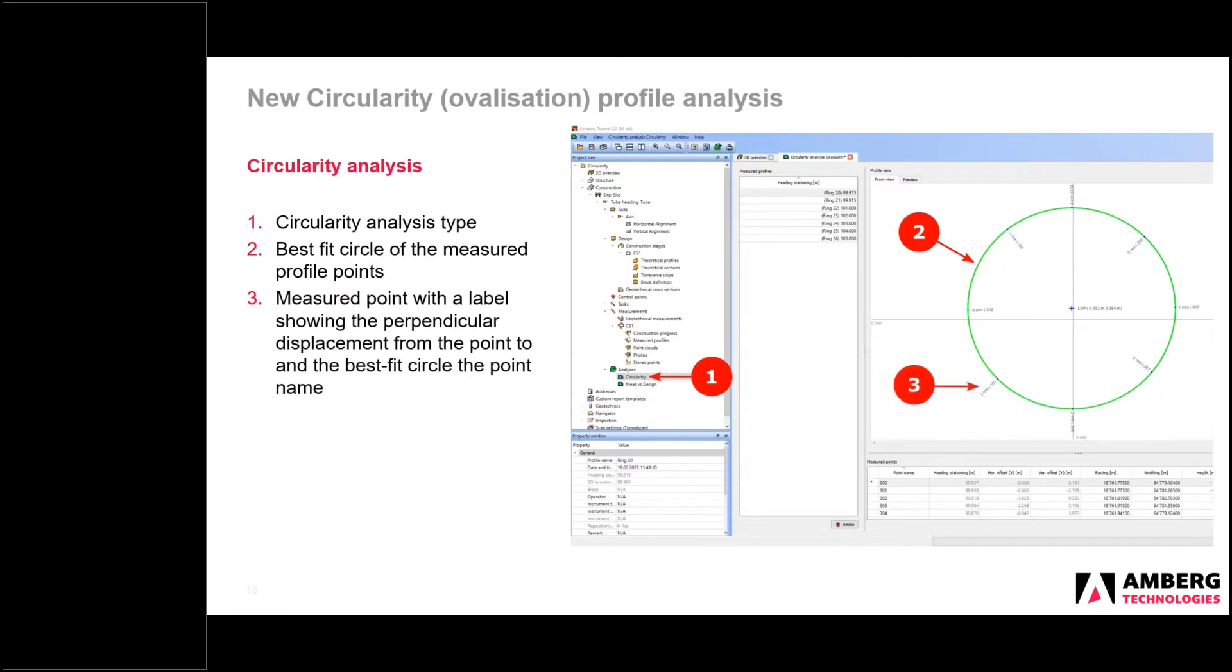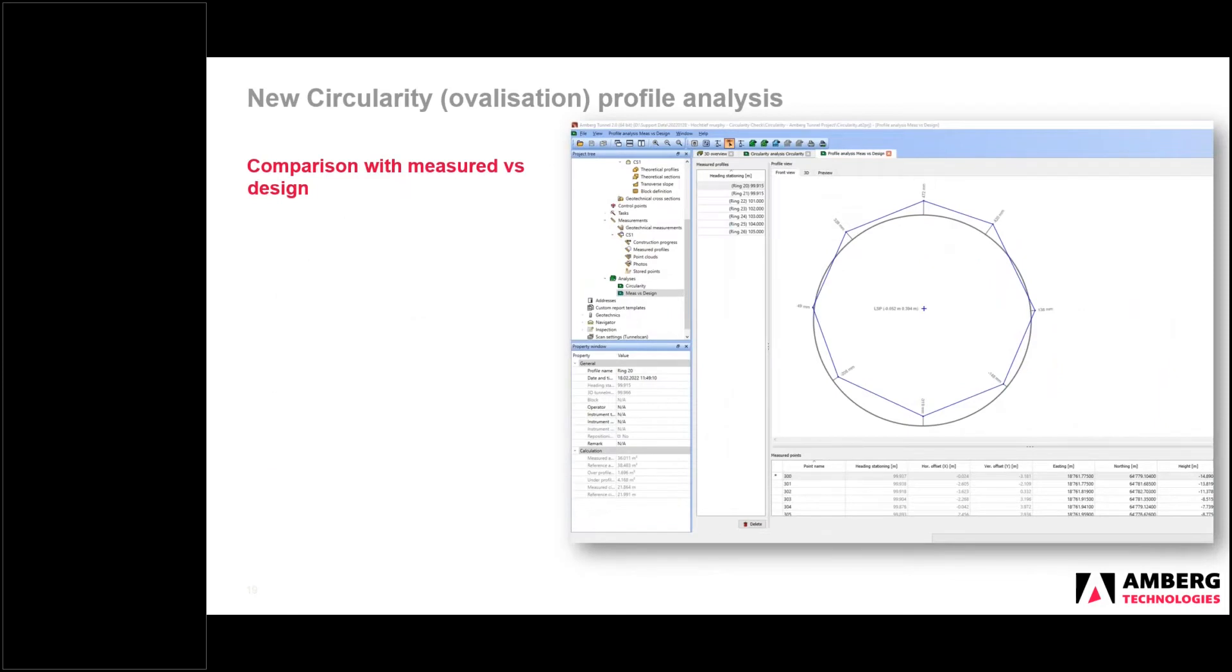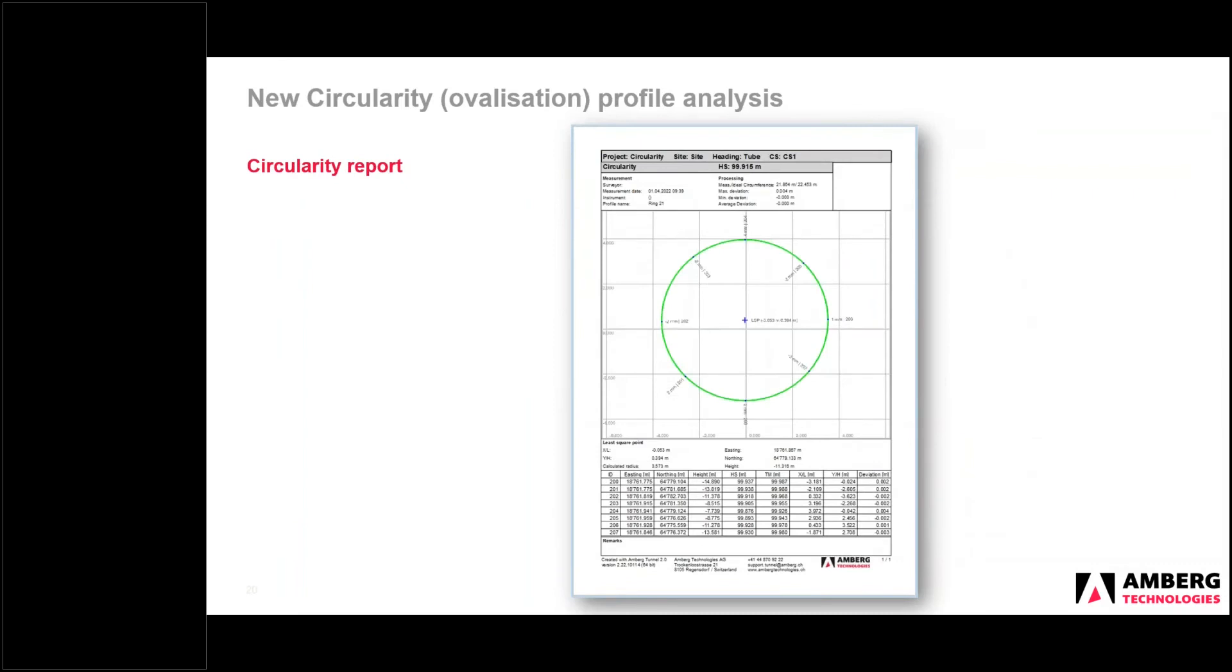And in addition, like our other analysis, we have the axis position. And we also have the least squares point, which is the center point of this best fitting circle with XY deviations from the axis position. So if we compare that to, for example, the measured versus design analysis using the same data, you can see here that there's a shift in the data where it is reporting deviations, radial deviations to the actual theoretical design. That's not the case with the circularity analysis. We also have a new report template for this circularity analysis. It has both the graphical view, the profile view, and the tabular information on one sheet.